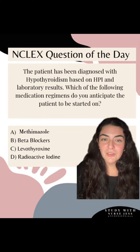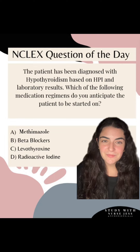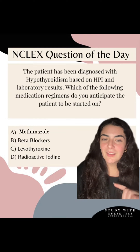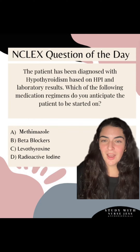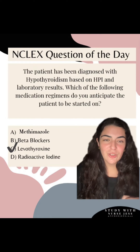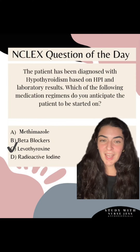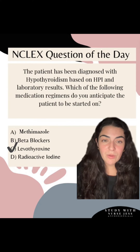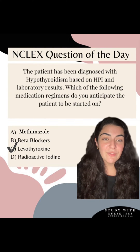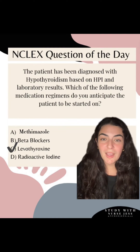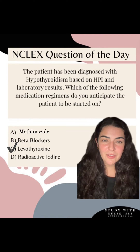Pause the screen and see if you can pick the answer. If you selected option C, then you are correct. So if your patient is hypothyroid, you give levothyroxine. For hypo, give levo — that's the acronym I like to use.